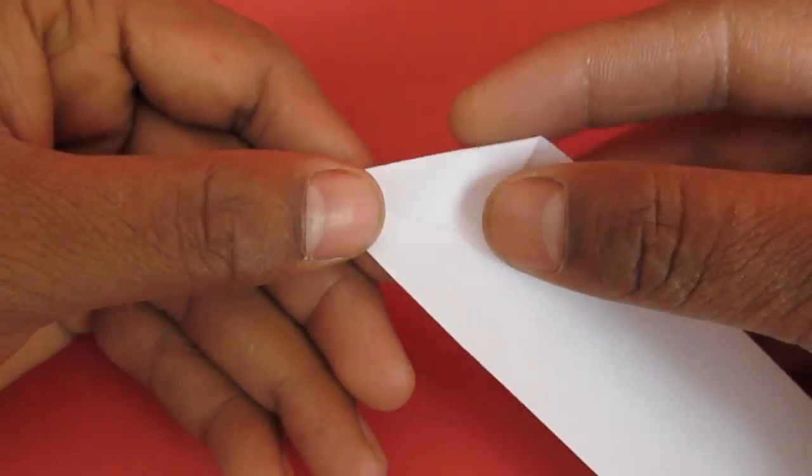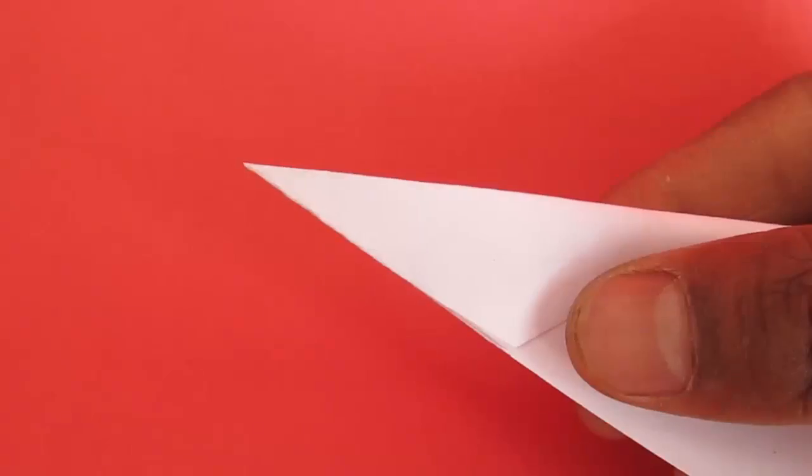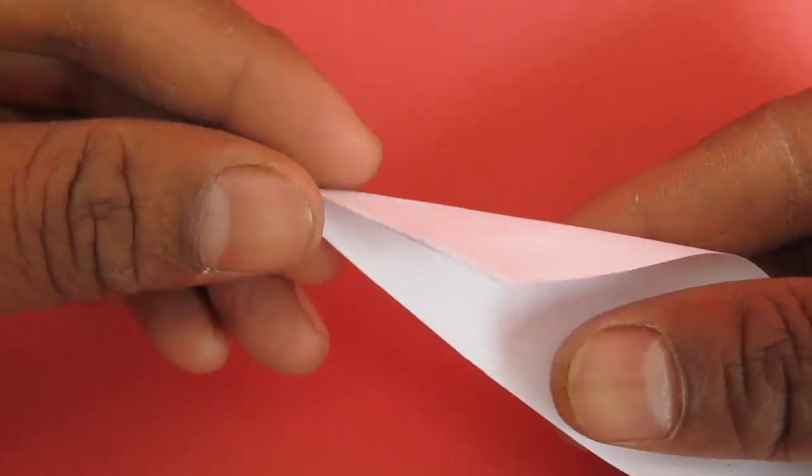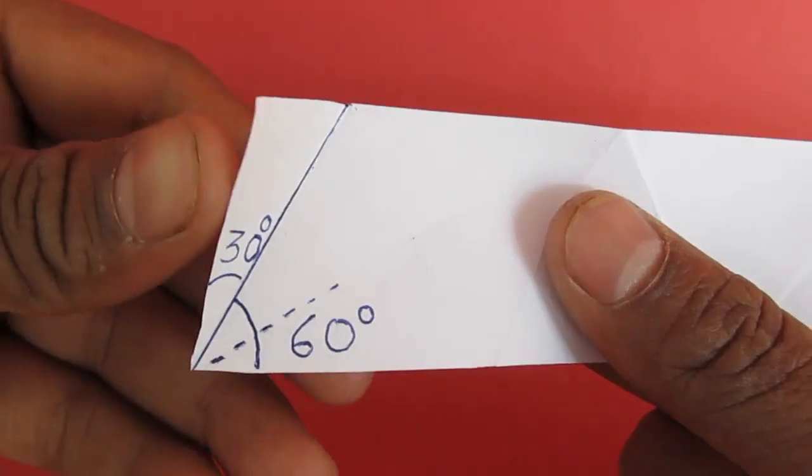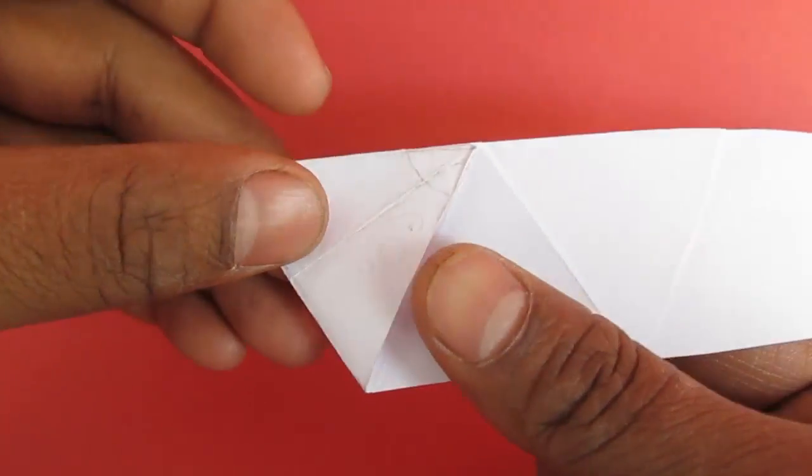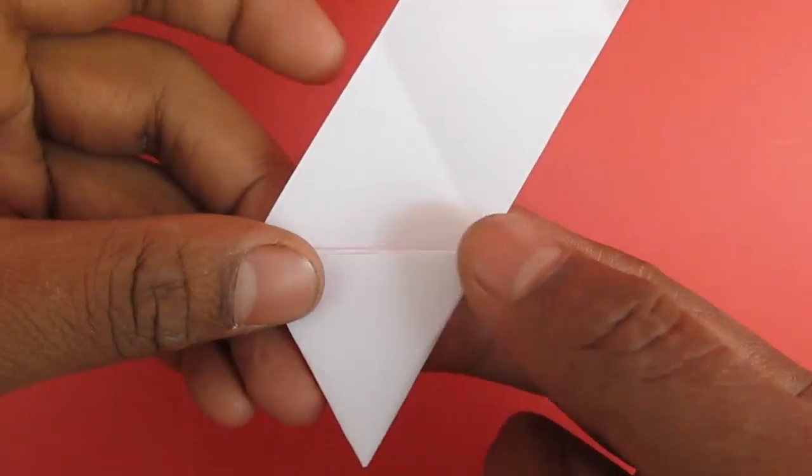On one end divide the strip in 3 equal parts so that you can see an angle of 30 degrees. This is because we divided the 90 degrees at the end in 3 equal parts. This makes our equilateral triangle and we will fold 10 such triangles on this strip.